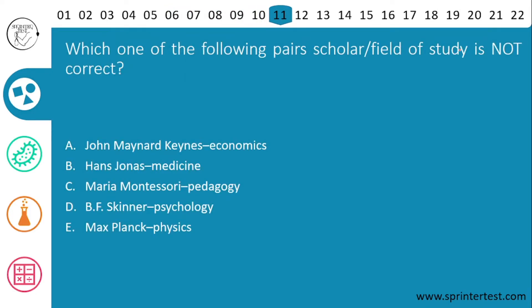Question 11: which one of the following scholar–field of study pairs is not correct? The options are: A) John Maynard Keynes – economics, B) Hans Jonas – medicine, C) Maria Montessori – pedagogy, D) BF Skinner – psychology, E) Max Planck – physics. I will give you five seconds to pause the video and find your answer.